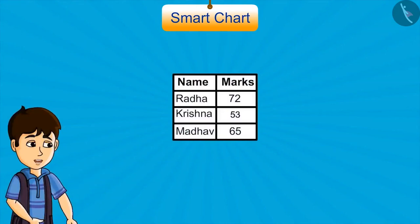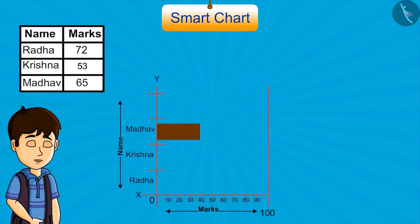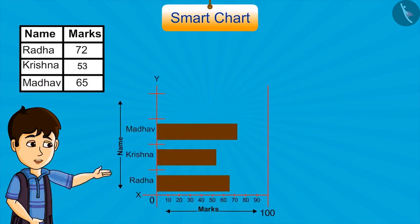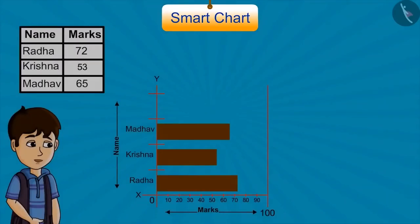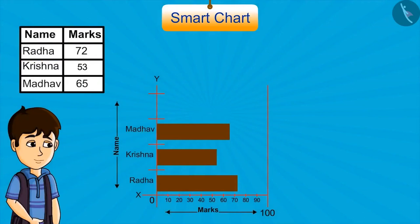For example, look at this data. Here are the marks scored by 3 students in maths. Radha got 72, Krishna got 53, and Madhav got 65. Let's represent this in strips. If we place the strips like this, is it right? You can see that according to the chart, Radha got 65 and Madhav got 72. This is very unfair with Radha. We cannot show wrong data like this. This smart chart is perfect because it is showing the correct marks scored by students.